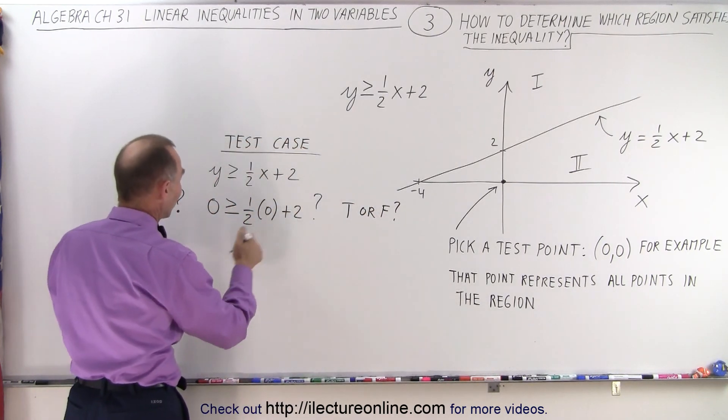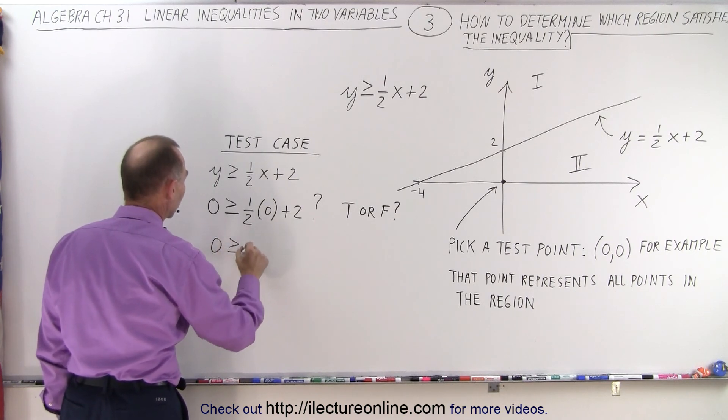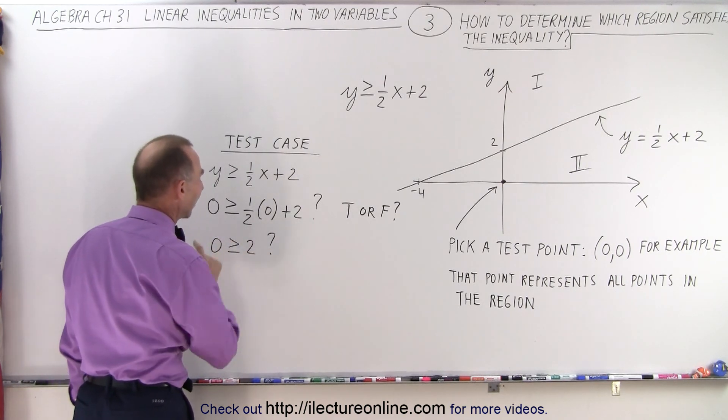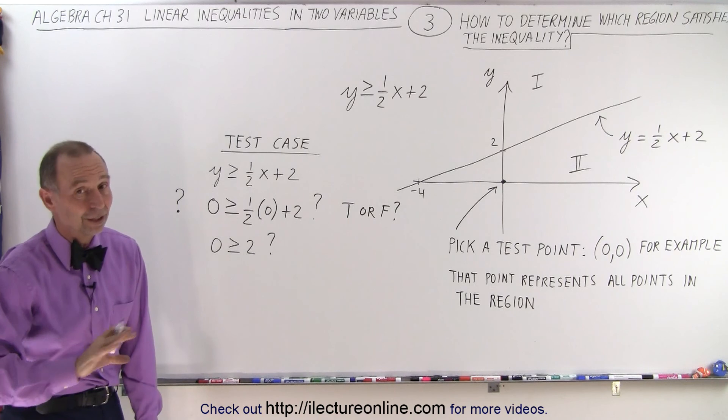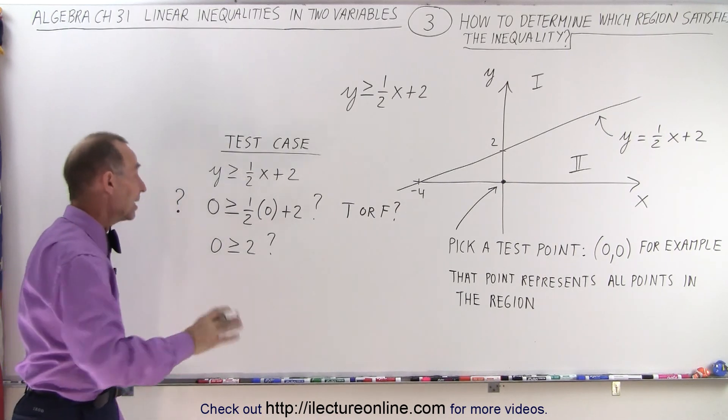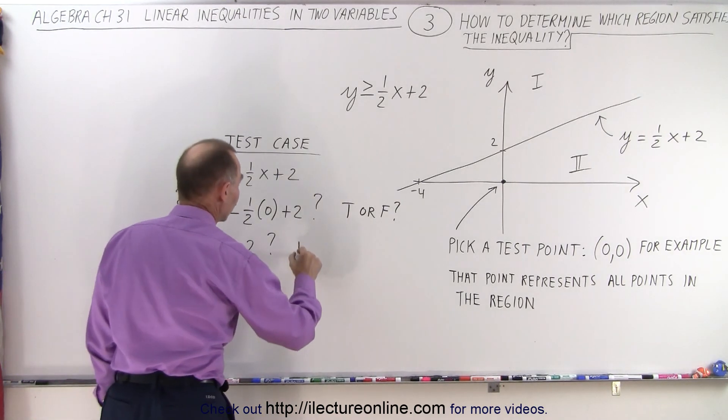When we simplify that, we get 0 greater than or equal to 2? Is that true? And obviously 0 is not greater or equal to 2, so therefore we know this is false.